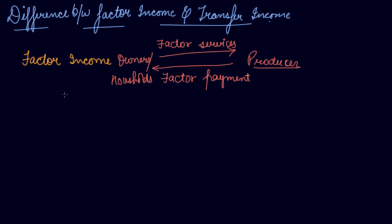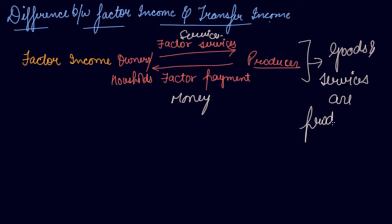Corresponding to the real flow of factor services from the household to the producers, there is a money flow from the producer to the household. As a consequence of these flows, there is a production of goods and services in the economy. This is the reason why goods and services are produced in the economy.